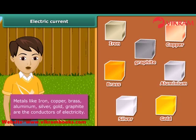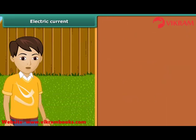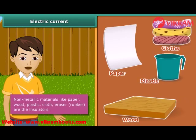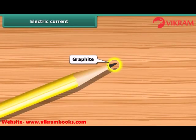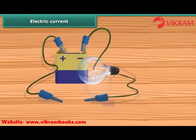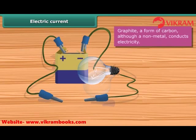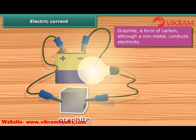The materials through which electric current doesn't flow are called insulators. Insulators are also known as non-conductors of electricity. Paper, wood, plastic, cloth, eraser, and rubber are insulators. Pencil lead is made of graphite — it is a form of carbon, a non-metal, but it is a conductor of electricity. To test whether a given material is a conductor or not, place the material between the free ends of wires in an electric circuit. If the bulb glows, the material is electrically conducting; otherwise it is an insulator.